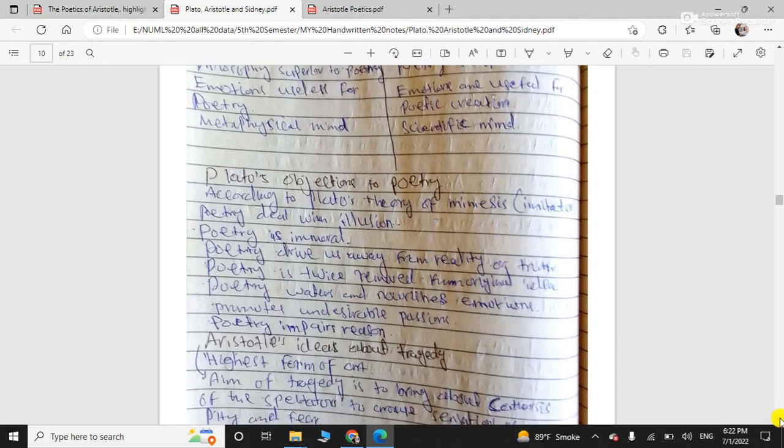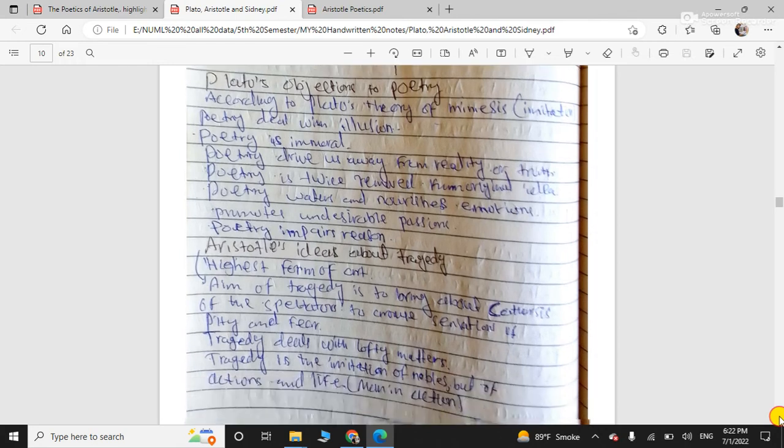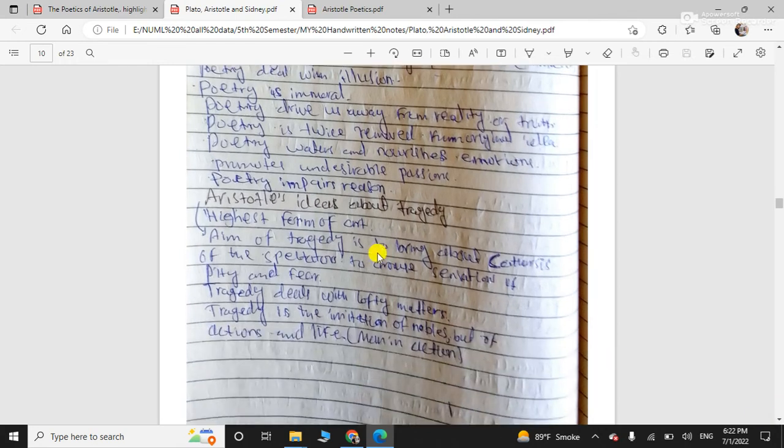So, what are Plato's objections? That I have already discussed this in detail video in the Republic, Plato's Republic. So, what is Aristotle's idea about tragedy? He considers tragedy as highest form of art. And he says that the aim of tragedy is to bring about catharsis. Catharsis should be evoked, which is very important. Catharsis you know, the twin feelings of fear, pity and fear.